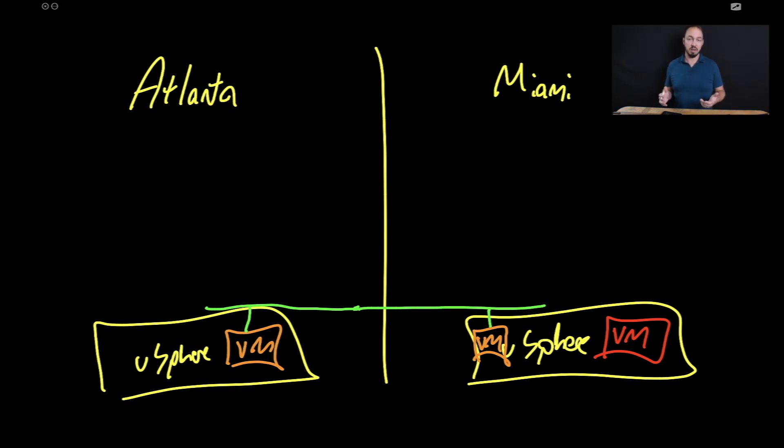And the cool thing about HCX, anytime you do a migration, you can always do a reverse migration. So if you moved it over there, you realized, hey, that did not go well, we need to pull it back. It's very easy to do that. Now I do want to mention before we move on, in this case, I put Miami here, right? But we could erase that and we could say,